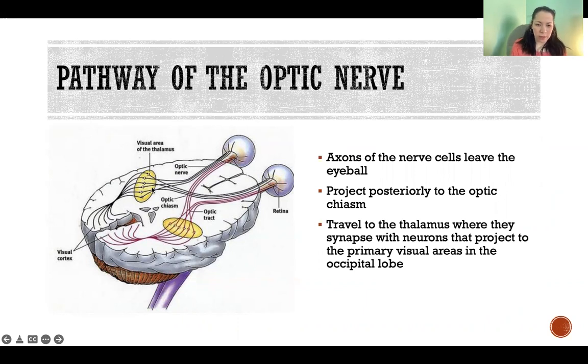So we have a left and right thalamus that we're processing those axons through. And there we have those first axons synapse with the next set of neurons. And so those neurons project then to the visual areas, the visual cortex and the occipital lobes.